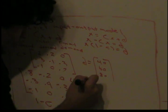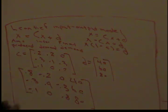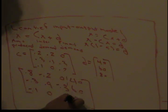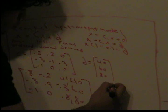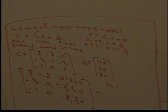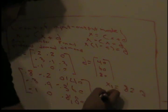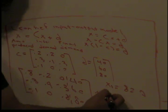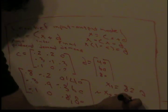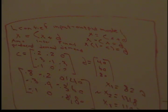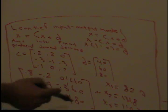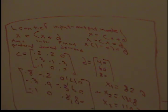Setting up the augmented matrix with the right-hand side [40, 60, 80] and row reducing, we find that x1 equals 82.7, x2 equals 131.8, and x3 equals 110.3. These are the production amounts needed to satisfy the final demand.